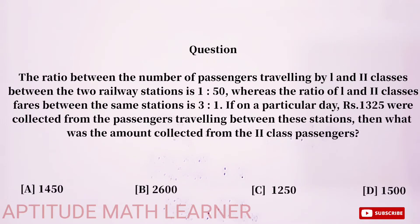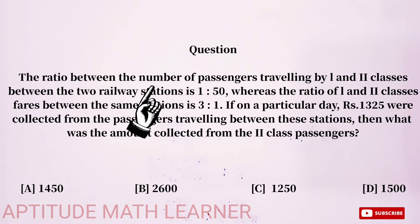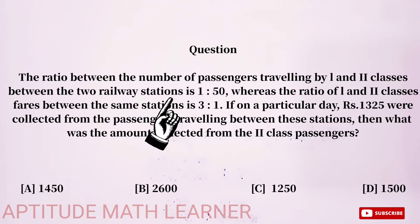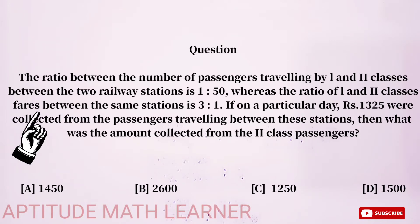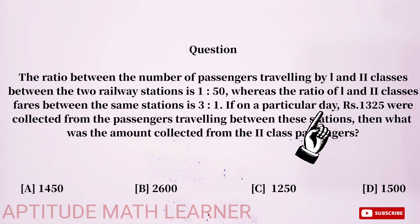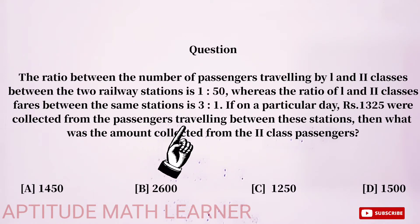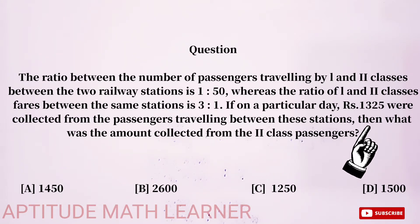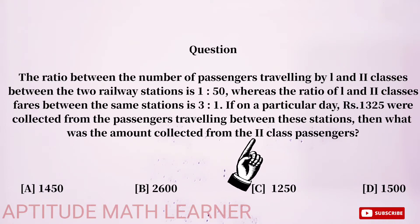Hello and welcome to my YouTube channel Aptitude Math Learner. Today's question is: the ratio between the number of passengers traveling by first and second class between two railway stations is 1:50, whereas the ratio of first and second class fares between the two stations is 3:1. On a particular day, rupees 1325 were collected from passengers traveling between these stations. What was the amount collected from second class passengers?